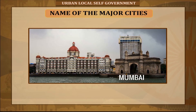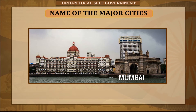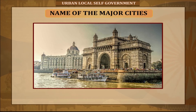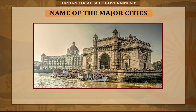Mumbai lies on the west coast of India and has a deep natural harbor. In 2009, Mumbai was named an Alpha World City. It is also the wealthiest city in India and has the highest GDP of any city in South, West, or Central Asia. Mumbai has the highest number of billionaires and millionaires among all cities in India.